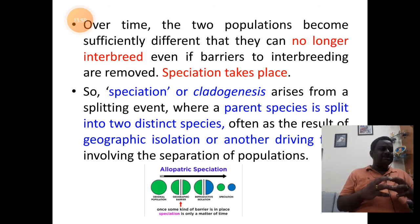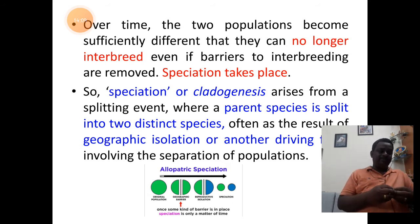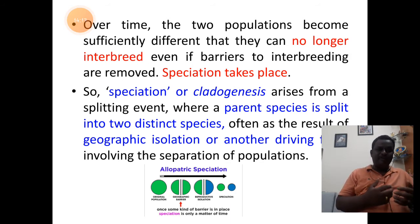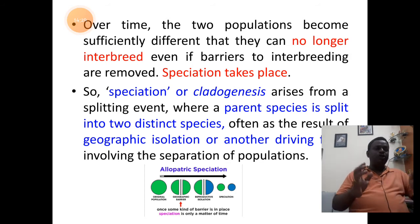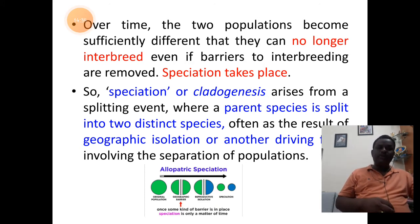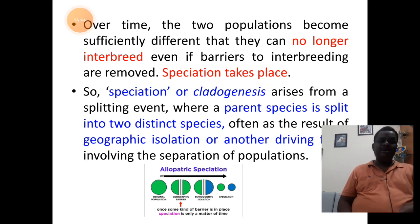Such inherited genetic variations over a period of time make the individuals reproductively isolated, thus helping in the process of speciation — formation of a new species. Speciation, also referred to as cladogenesis, arises from splitting of the ancestor forms into distinct species. Here too we find geographical isolation barriers along with reproductive barriers.